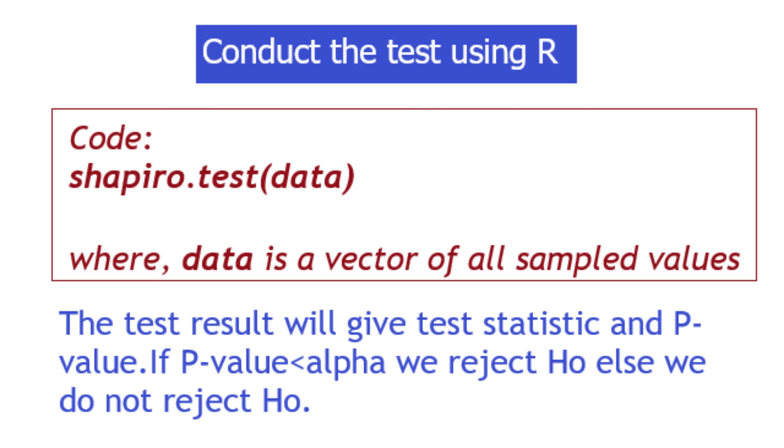We know if p-value is less than alpha, we reject null hypothesis. Else we accept the null. If p-value is greater than alpha, we can conclude that the data came from a normal population.